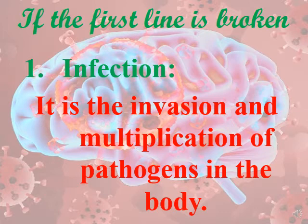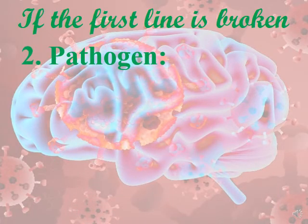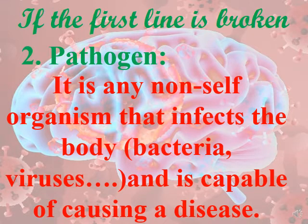If the first line of defense is broken, we will have infection. Infection is the invasion and multiplication of pathogens and other microbes inside the body. A pathogen is any non-self organism — something that doesn't belong to my body — that infects the body and is capable of causing a disease.